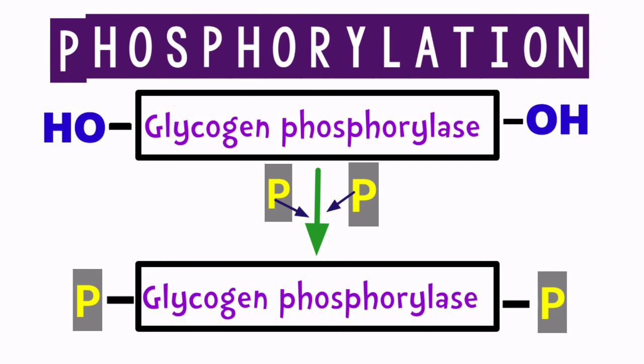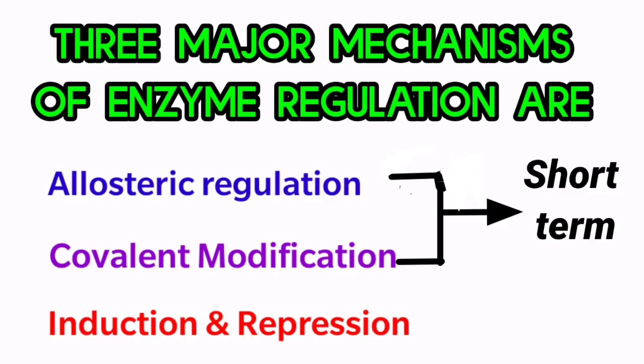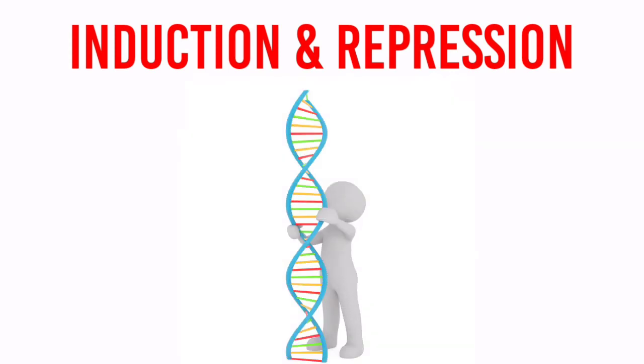Allosteric regulation and covalent modification are short-term regulations because they do not affect the concentration of enzymes — they regulate enzyme activity by altering the enzymes already present in the cell. Therefore they have a qualitative effect rather than a quantitative one, which is why they are called short-term regulation. The long-term regulation is induction and repression, which takes place at the gene level.